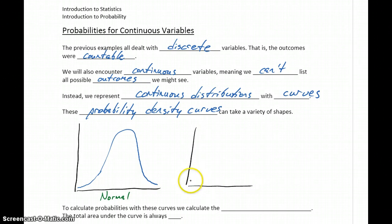We could have a skewed distribution, which could either be skewed left or skewed right.